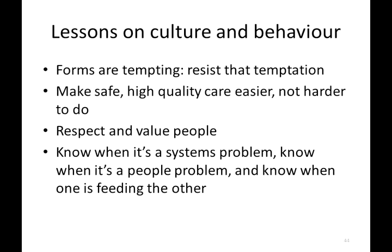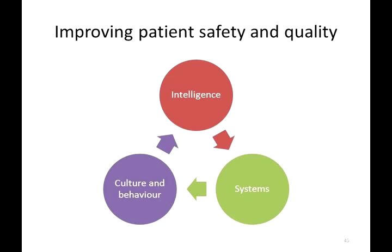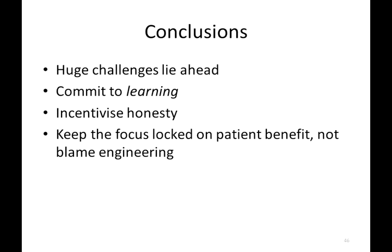The focus has got to be on making safe, high quality care easier — not harder — to do. We need to respect and value staff. We need to know when it's a systems problem, when it's a people problem, and when one is feeding the other. Too often we fail to distinguish these and end up mistaking systems problems for people problems, or vice versa. So the model suggests that if we're going to improve patient safety and quality, we need to think about intelligence, systems, culture and behaviour together — thinking about any one of those components on its own doesn't work. Huge challenges lie ahead. We have to commit to learning, incentivise honesty, really know how well we're doing, and know how well the solutions we introduce are performing. If we keep the focus locked onto patient benefits and not blame engineering, we can go a very long way. Thank you for listening.